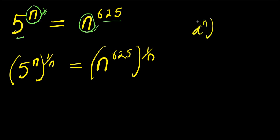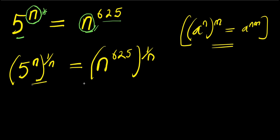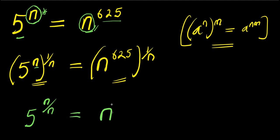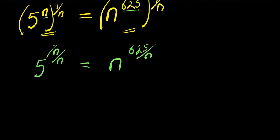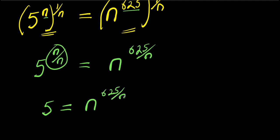Now, if you have a^n raised to the power 1/n, that equals a to the power n times 1/n. Applying this here, what we get is 5 to the power of n times 1/n, that is n over n, equals n to the power 6/5 times 1/n, that is 6/5 divided by n. Now n divided by n is 1, so we have 5 equals n to the power 6/5 over n.